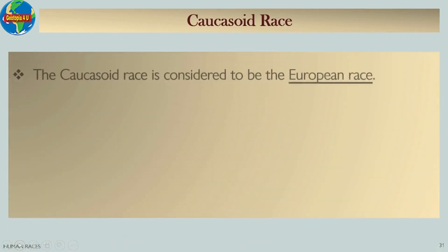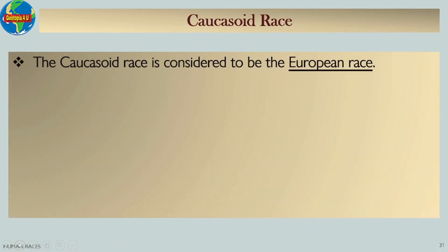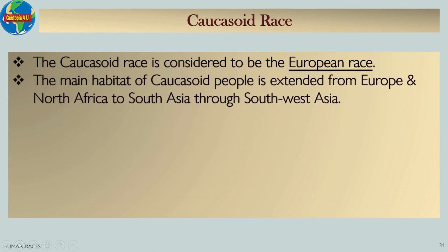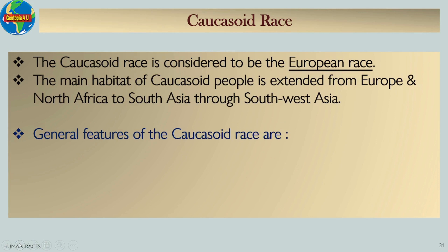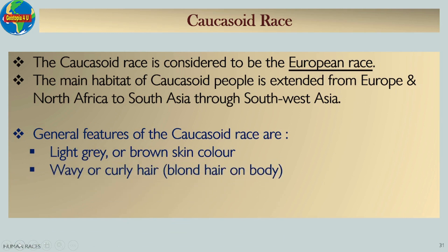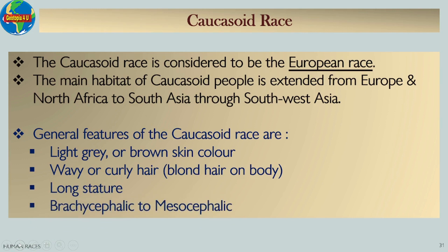Caucasoid race: The Caucasoid race is considered to be the European race. The main habitat of Caucasoid people extends from Europe and North Africa to South Asia through Southwest Asia. General features of the Caucasoid race are: light gray or brown skin color, wavy or curly hair including blonde hair on body, long stature, and brachycephalic to mesocephalic head.